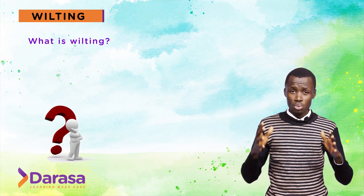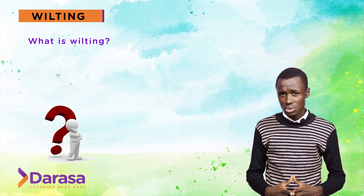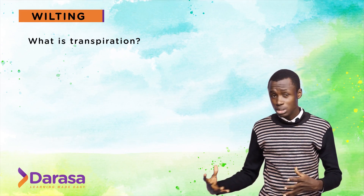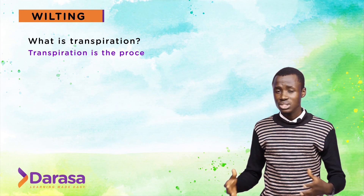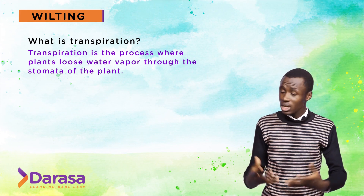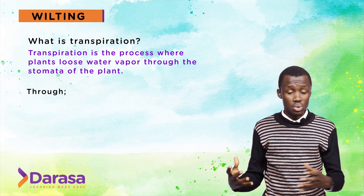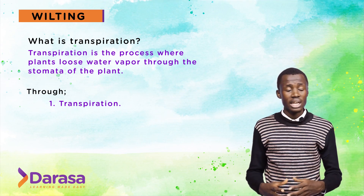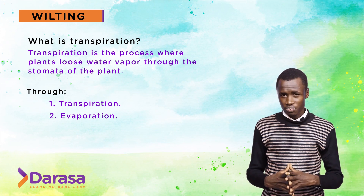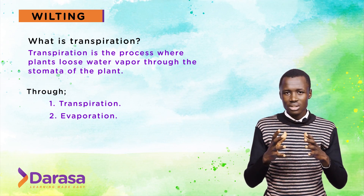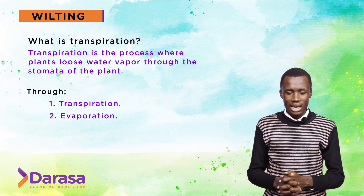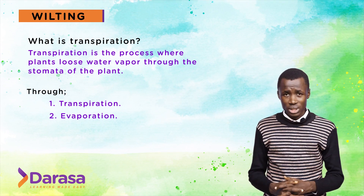So what is wilting? I'm going to begin by giving you an illustration. But before I do that — do you know what transpiration is? Transpiration is a process whereby plants lose water vapor. Plants can lose water through transpiration, and they can also lose it through evaporation. Having understood what transpiration and evaporation are, let me now talk about wilting.